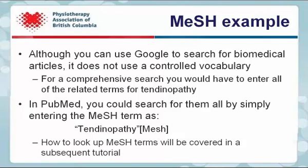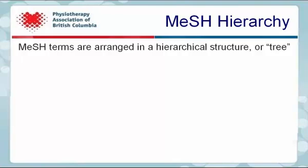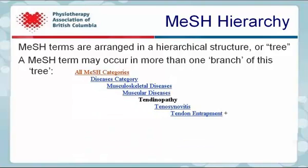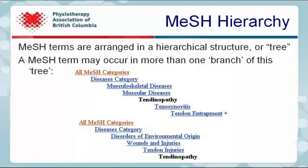How to look up MeSH terms will be covered in a subsequent tutorial. MeSH terms are arranged in a hierarchical structure or tree, and a MeSH term may occur in more than one branch of this tree. The MeSH term tendinopathy is listed as a narrower term in two branches of the MeSH tree — under muscular diseases and also as a narrower term under tendon injuries.